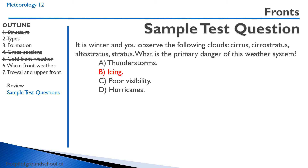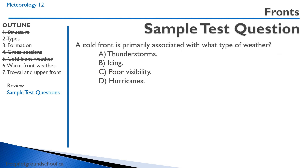Regarding hurricanes — that's not really typical of our weather systems in Canada, although we can get them in the maritime regions. Next question: What type of weather is a cold front primarily associated with? Remember, a cold front has cold air forcing its way under the warm air, pushing warm moist air up, so it's going to be unstable. You're going to end up with thunderstorms, and the faster that cold front moves, the bigger the thunderstorms will be.